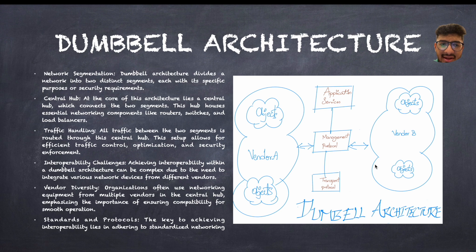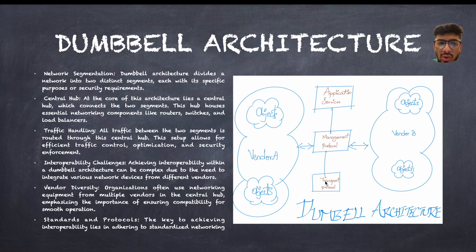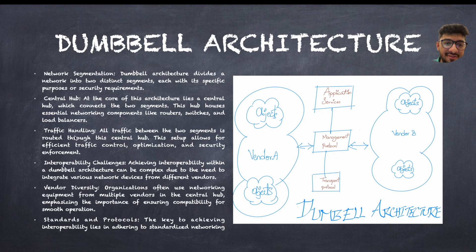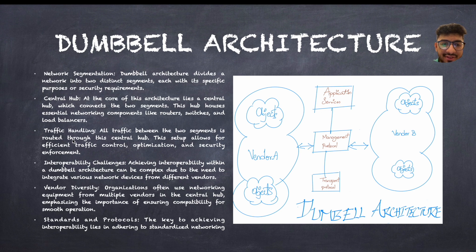There is a central hub at the core of this architecture which connects the two segments. In the middle, you can see application services, management protocol, and transfer protocol — those we call the central hub. All traffic between the two segments is routed through the central hub. This setup allows for efficient traffic control, optimization, and security enforcement.